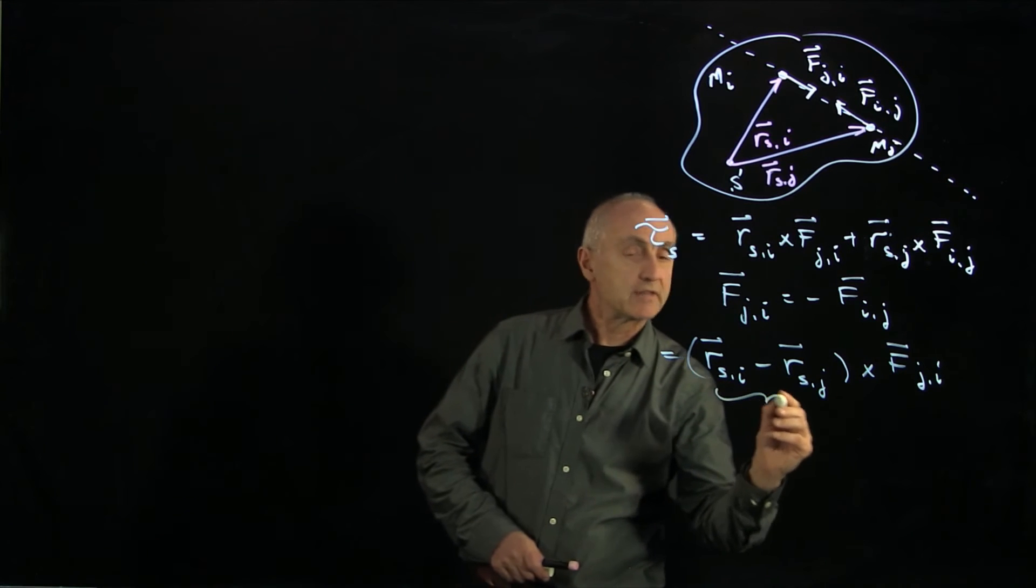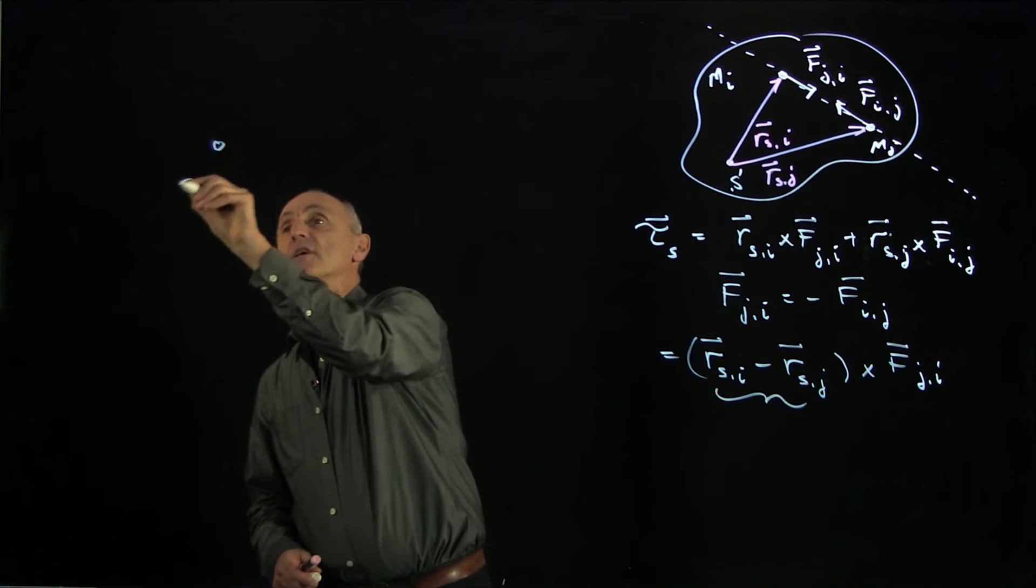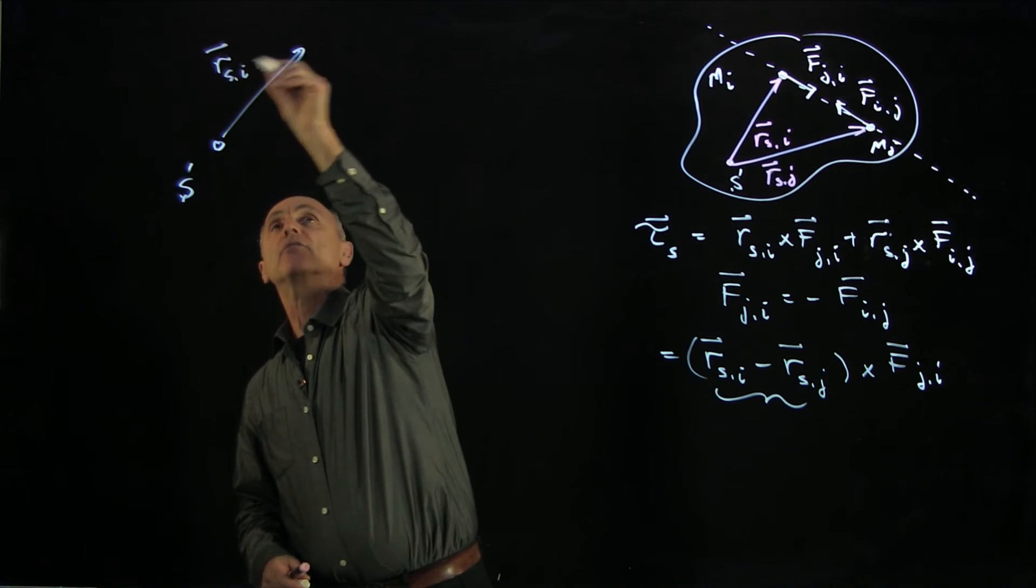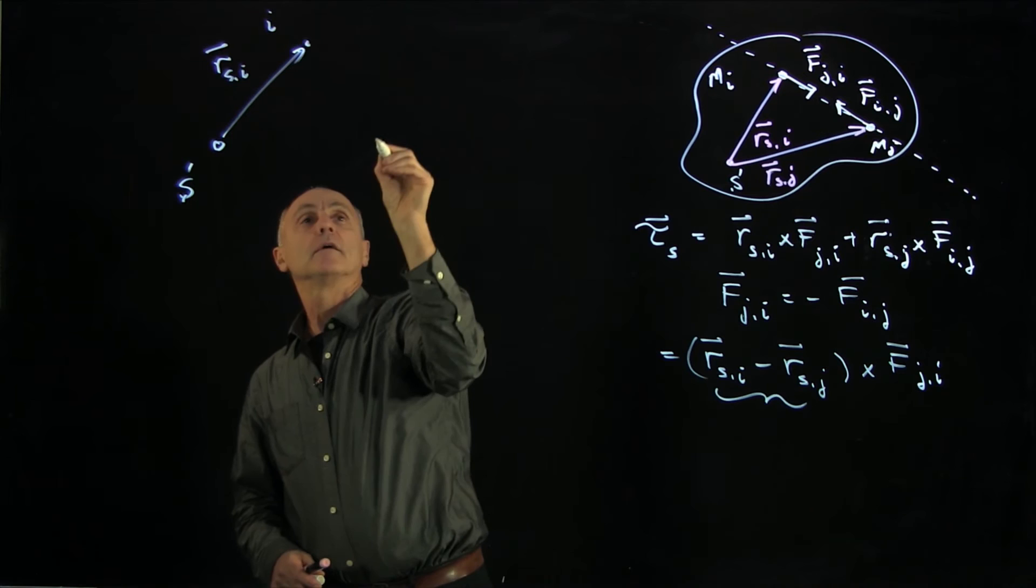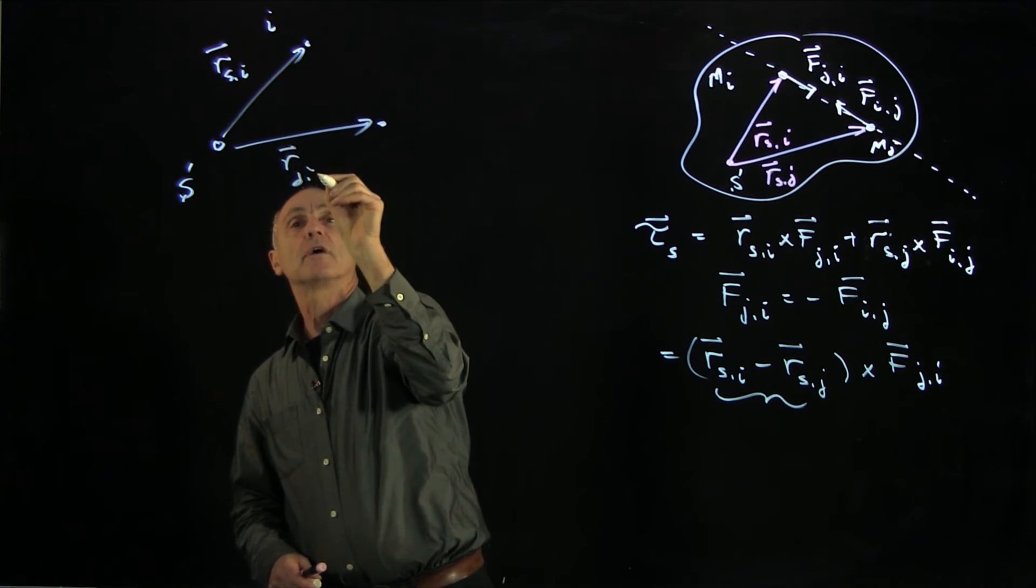Now let's look at this vector in particular. We can draw it again over here just to see it. Here's S, here is RSI, and here is the vector RSJ.